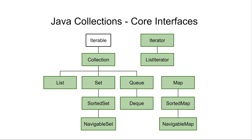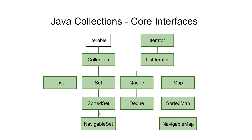Finally, we have the NavigableSet, which provides methods for navigating the elements of a sorted set in the order they are sorted internally. NavigableSet extends SortedSet, and SortedSet extends Set — so a SortedSet is a Set, and a NavigableSet is a SortedSet and also a Set.